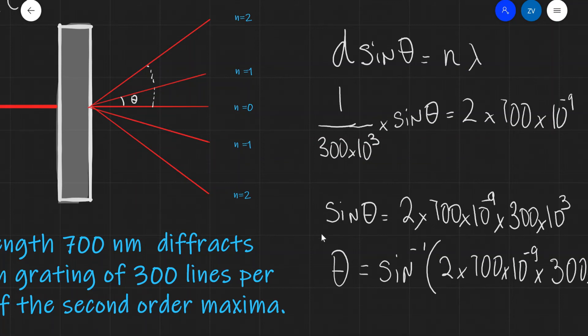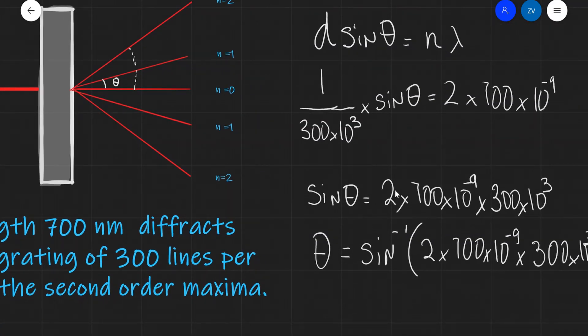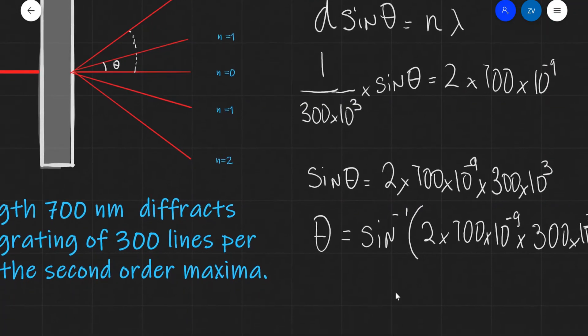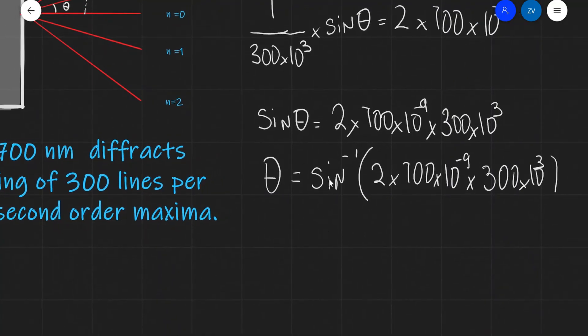Rearranging for sin θ, we get sin θ = 2 × 700×10⁻⁹ × 300×10³. Taking the inverse sine of this expression gives us θ = 24.8°, or to two significant figures, 25 degrees.